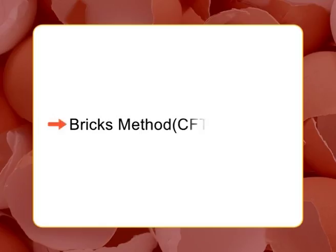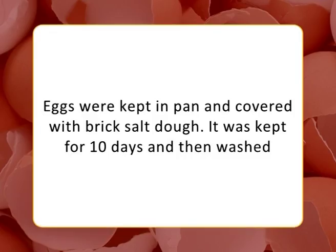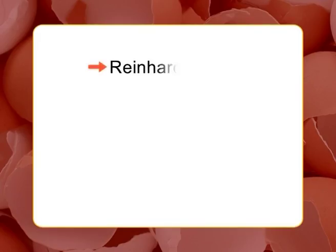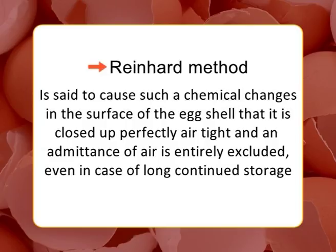Brick method (commonly known as CFTRI method): Practiced by ancient Chinese, brick powder and salt were mixed in a ratio of 2:1 with water added and kneaded. Eggs were kept in a pan and covered with the brick-salt dough, kept for 10 days, and then washed. This increased the storage quality of eggs.